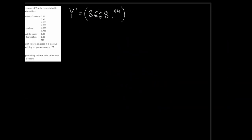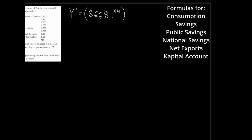Now that we have our equilibrium GDP, we can solve for several additional variables: consumption, private savings, public savings, national savings, net exports, and the capital account. Let's walk through how to solve each of these.